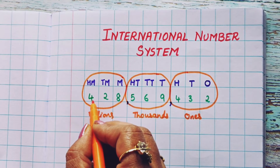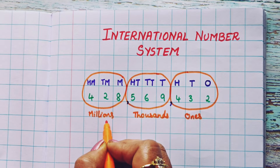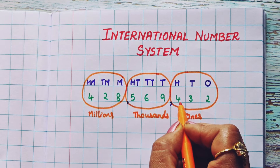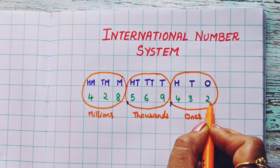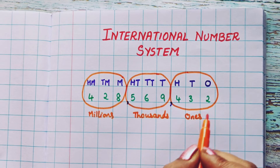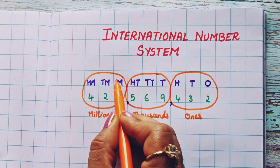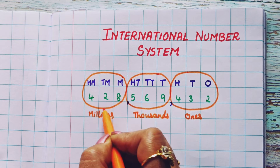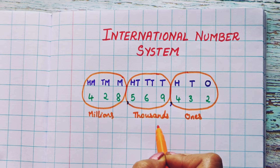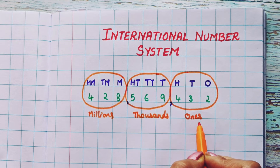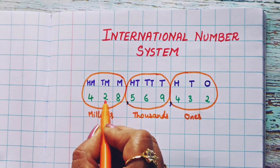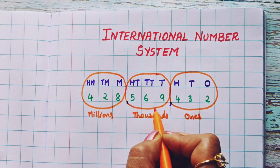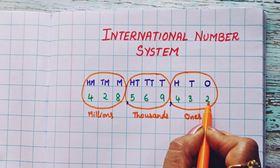So let's read this: four hundred and twenty-eight million, five hundred and sixty-nine thousand, four hundred and thirty-two. The numbers present in one group are read together — millions group together, thousands group together, ones group together. So: four hundred and twenty-eight million, five hundred and sixty-nine thousand, four hundred and thirty-two.